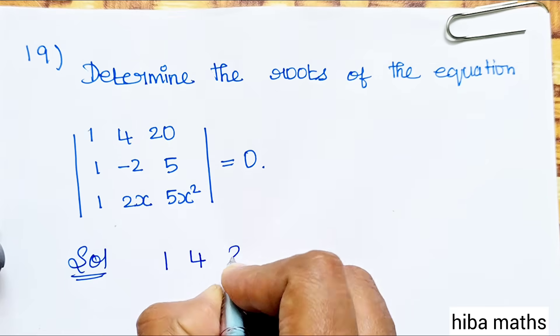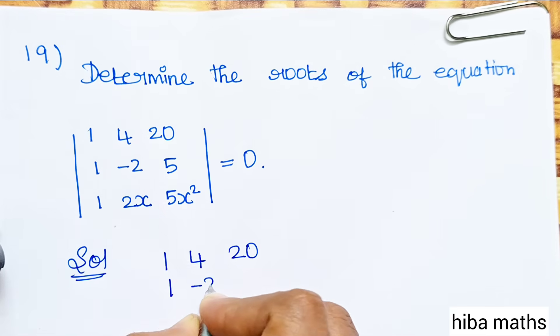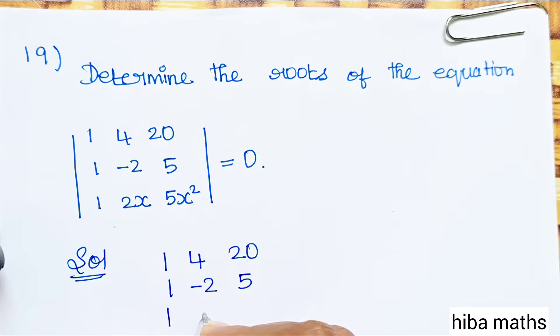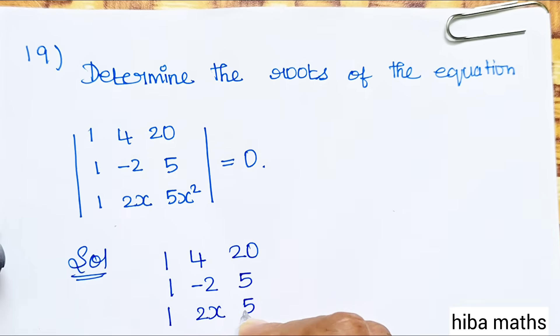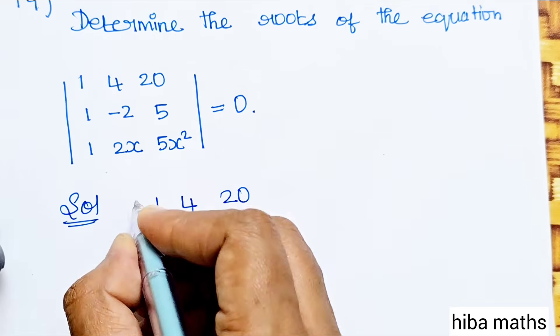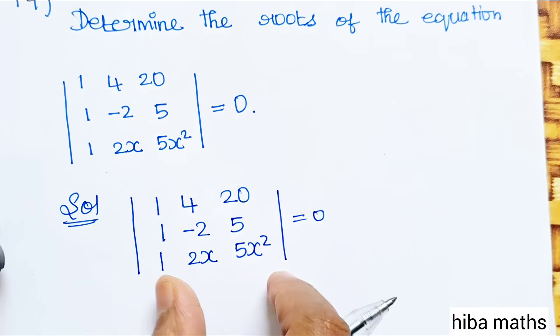The given matrix determinant equals zero. The matrix is: row 1: 1, 4, 20; row 2: 1, −2, 5; row 3: 1, 2x, 5x².